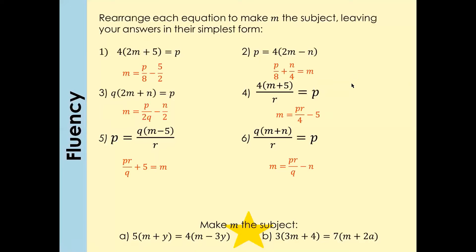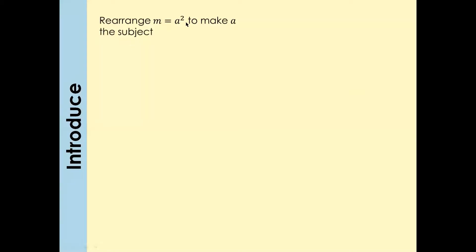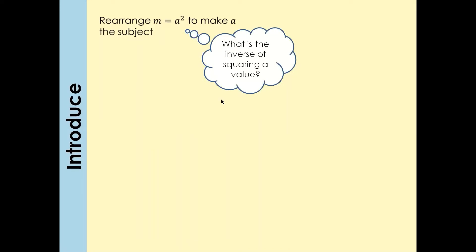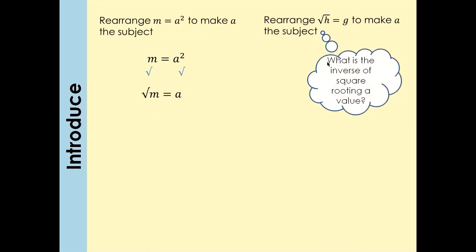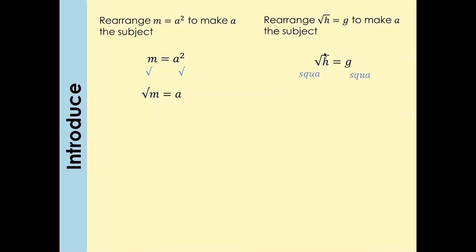In this question, we've got a square: m equals a squared, and we want to make a the subject. To get rid of the square, you square root both sides — the inverse of squaring is square root. So a is going to be the square root of m. Now for this one: we want to make h as a subject where the square root of h equals g. So you square both sides — the square cancels the square root — and you're left with h equals g squared.